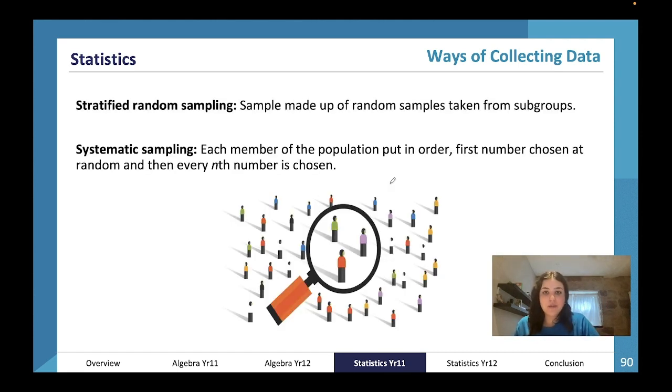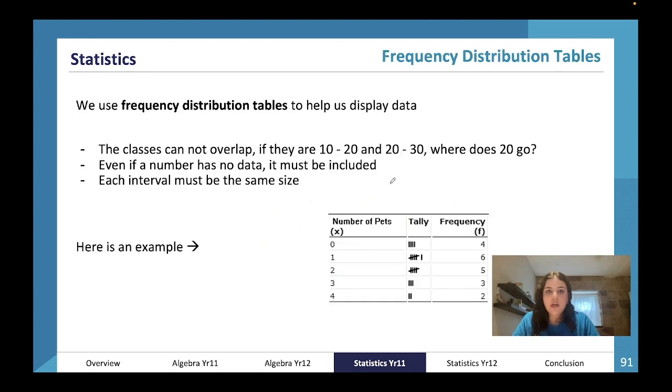Stratified random sampling is when the sample is made up of random samples taken from subgroups, like picking five random people from each year 12 class. Systematic sampling is when every member of the population is put in order and every certain number of person is chosen—like putting everyone in alphabetical order and choosing every fifth person. This is all year 11 content. It isn't explicitly tested, but it's going to be at the base of your stats questions.